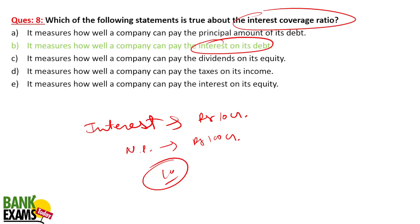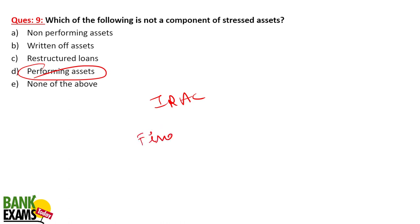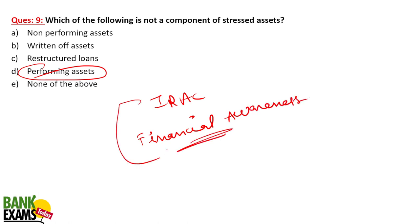Regarding stressed assets — which of the following is not a component: a performing asset is one generating income for a bank, i.e., a borrower paying EMIs or loan installments on time. A non-performing asset (NPA) is one not generating income for the last 90 days. Please go through the IRAC norms in the financial awareness section for an in-depth understanding of NPAs — there is a 30-minute session available on IRAC.